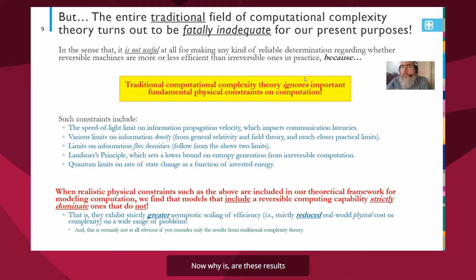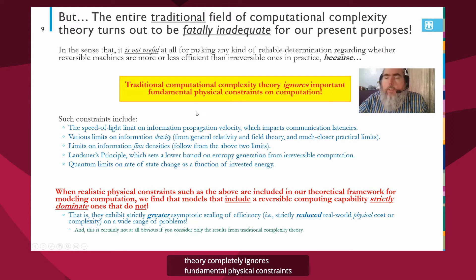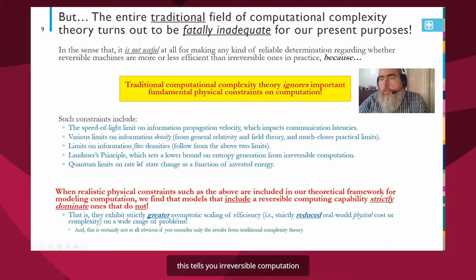Now why are these results from traditional complexity misleading? Well, it's because traditional complexity theory completely ignores fundamental physical constraints on computation, and these include the speed of light limit, various limits on information density, bits per unit volume. These imply limits such as on communication latencies, limits on information flux density across the surface. And then together with Landauer's principle, this tells you irreversible computation produces entropy, which can't be destroyed, and you have to get it outside the surface of your computer because it can't build up inside indefinitely due to the information density limits. And so all these together, you find yield, there are real scaling advantages from doing things reversibly that are not captured at all by traditional complexity theory.